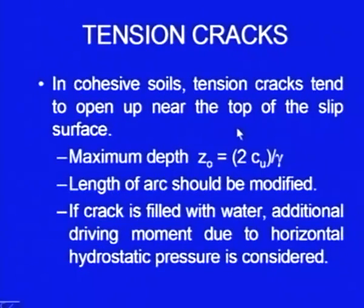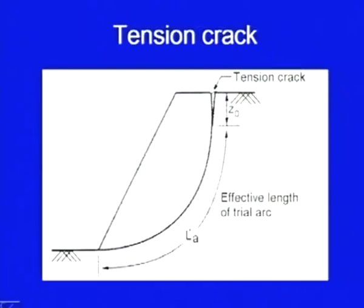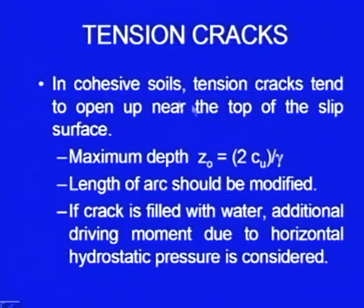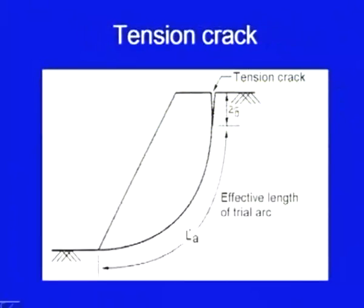So we have discussed the mass methods, and we have not discussed so far about the tension crack which can develop at the upper surface. In the case of cohesive soils, a tension crack tends to open up near the top of the slip surface. So this is the cohesive slope; generally a tension crack may develop here and this depth of the tension crack, theoretically we can calculate it. What happens because of this tension crack is that the available shear strength which we get will be only from the remaining length, which is termed here as the effective length of the trial arc.